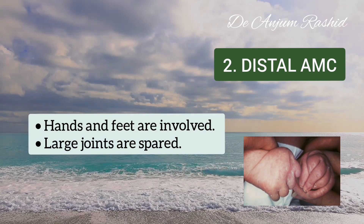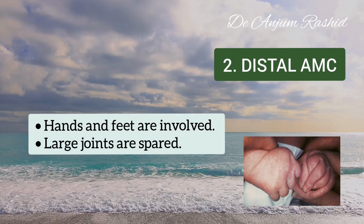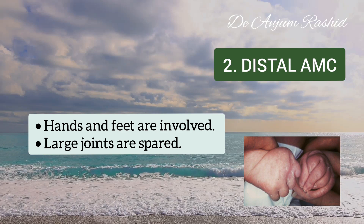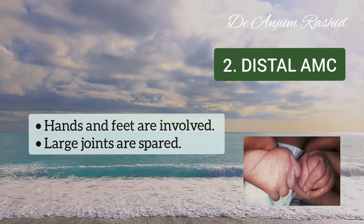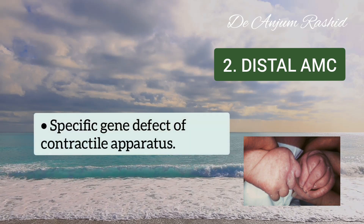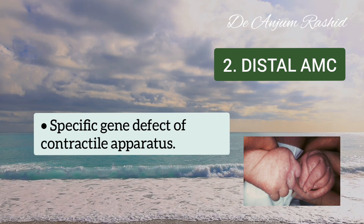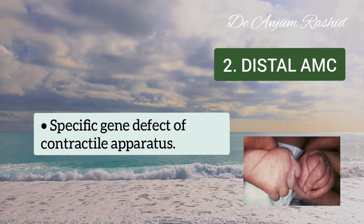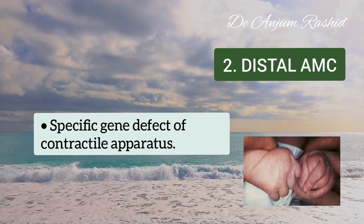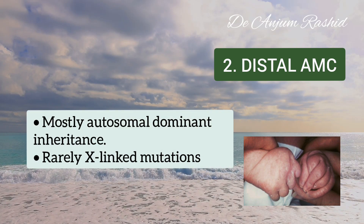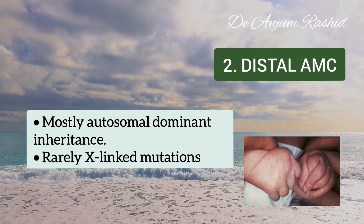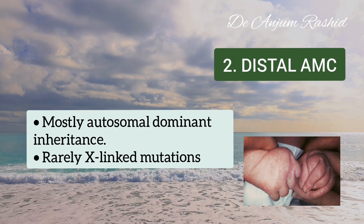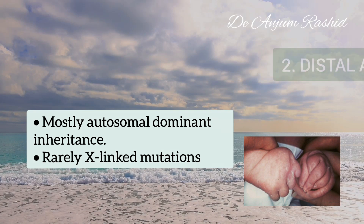The second type is distal arthrogryposis. In this, only hands and feet are involved and the large joints are typically spared. These are a heterogeneous group of disorders associated with specific gene defects that encode the contractile apparatus of the muscles. Many distal arthrogryposis cases are transmitted as autosomal dominant disorders, but X-linked mutations are also known.